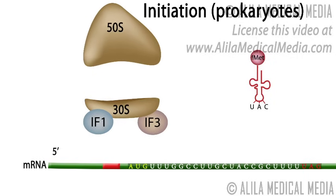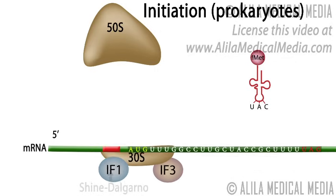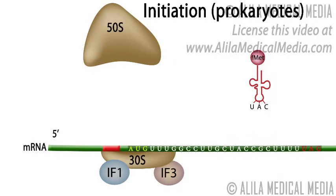This complex then binds to a purine-rich region, the Shine-Dalgarno sequence, upstream of the AUG start codon on the mRNA. The Shine-Dalgarno sequence is base paired to a complementary sequence on the 16S rRNA, a component of the small subunit. This alignment ensures that the start codon is in the right position within the ribosome.